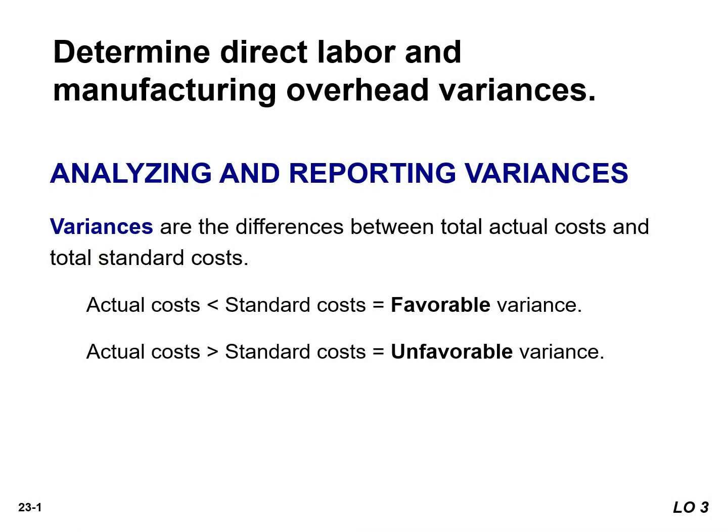In this video, we will determine both direct labor and manufacturing overhead variances. Before we take a look at these variances, I just want to remind you that if actual costs are less than our standard cost, this will result in a favorable variance. If however, our actual costs exceed the standard cost, this will result in an unfavorable variance.